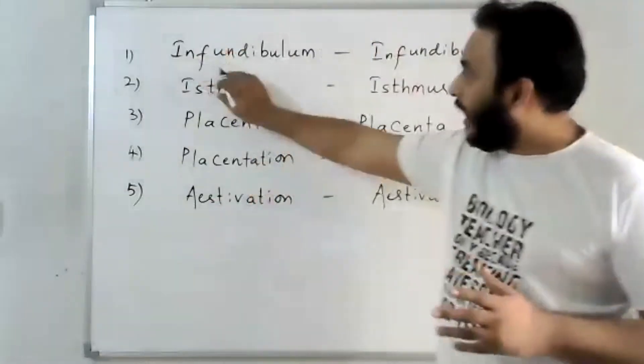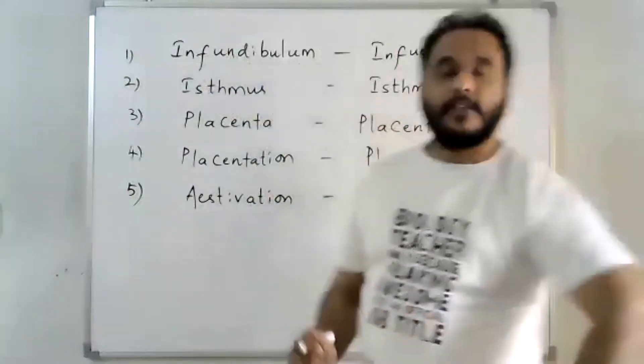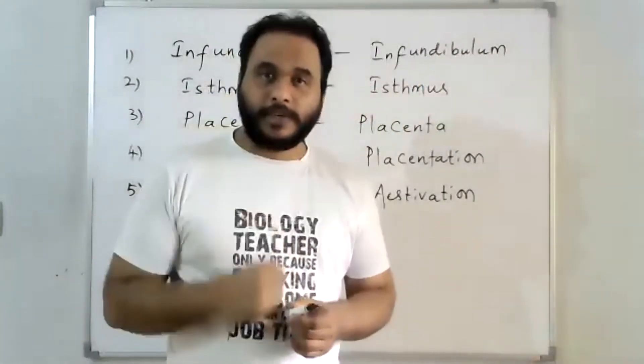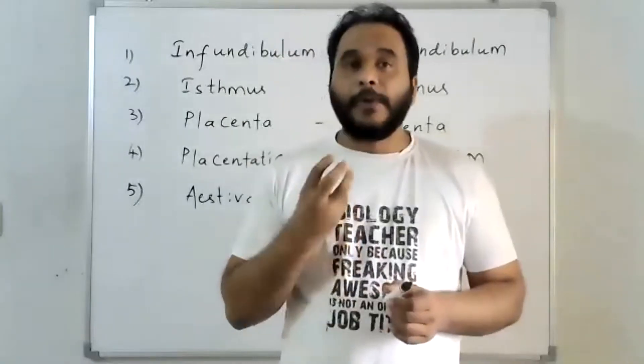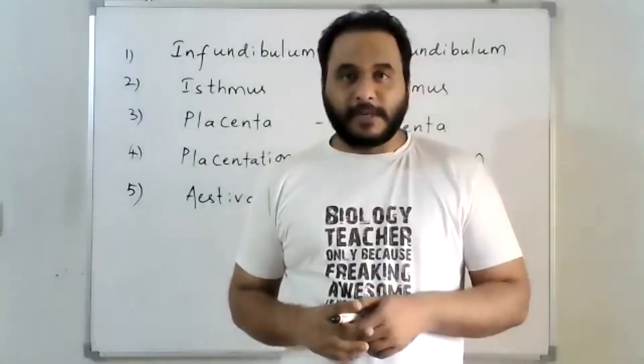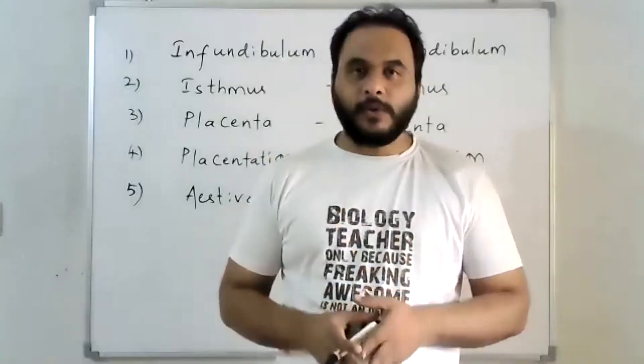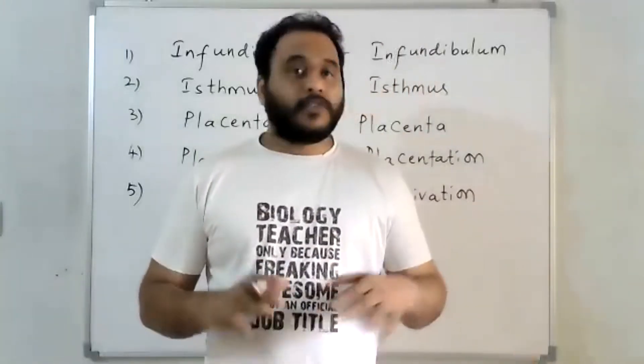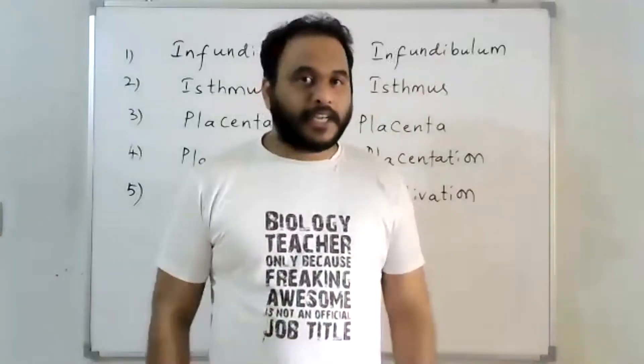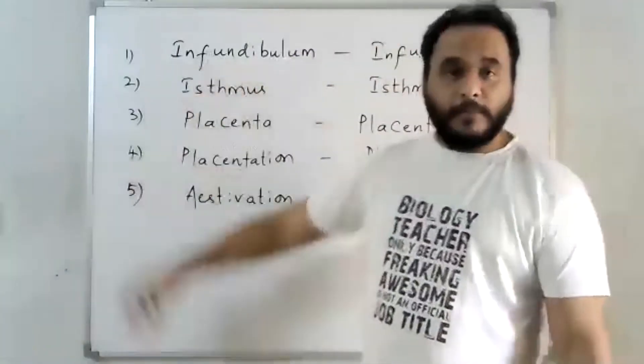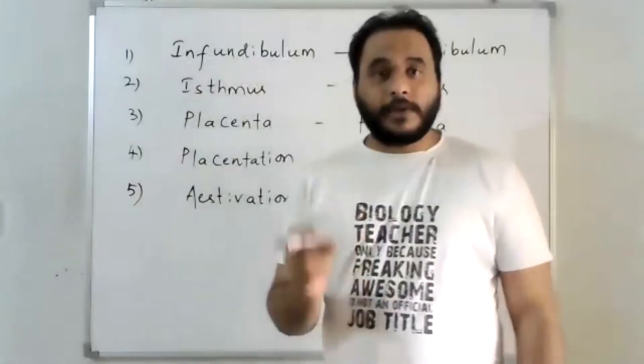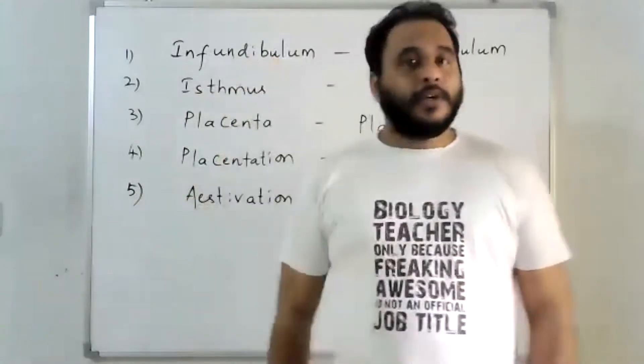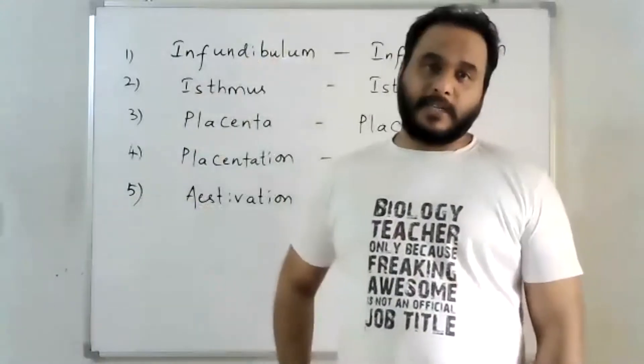First, infundibulum. This infundibulum is a stalk-like structure that connects the pituitary gland to the hypothalamus. The pituitary gland is the master gland of the body because it controls the secretions of all the other glands in our body. And this infundibulum is a stalk-like structure by which the pituitary gland is attached to the hypothalamus.